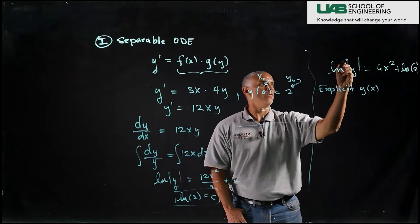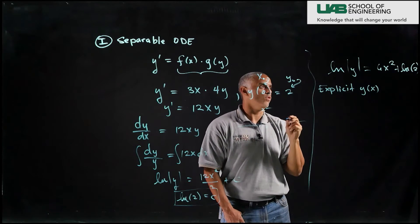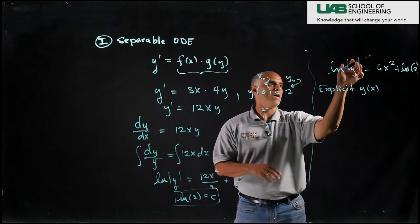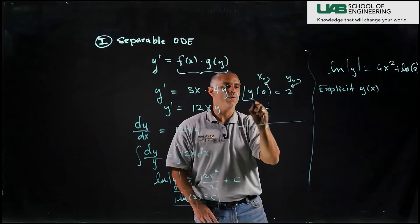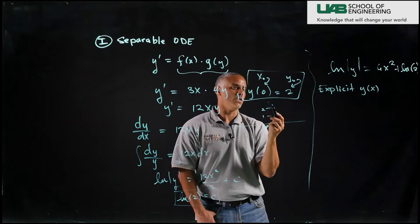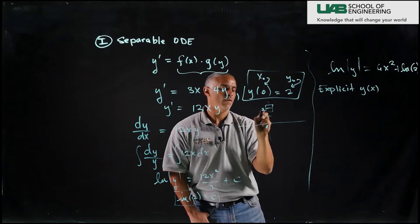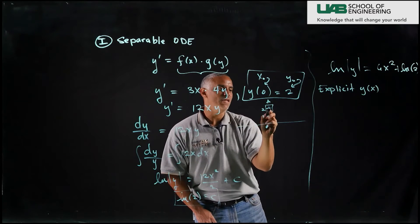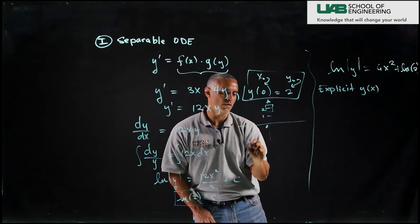So I have to resolve the absolute value and the natural log. Well to resolve the absolute value I always, always, always look to the initial condition. And since my initial condition is positive, I have a positive y near 0, 2, nothing negative.